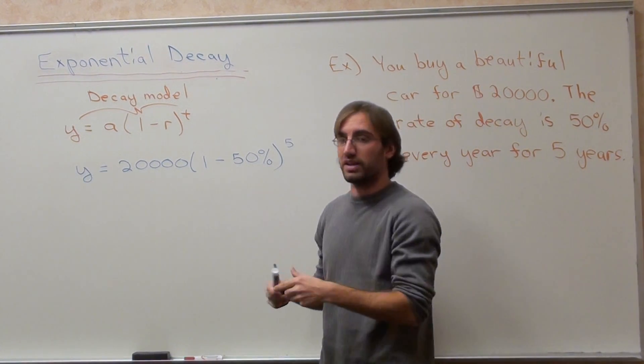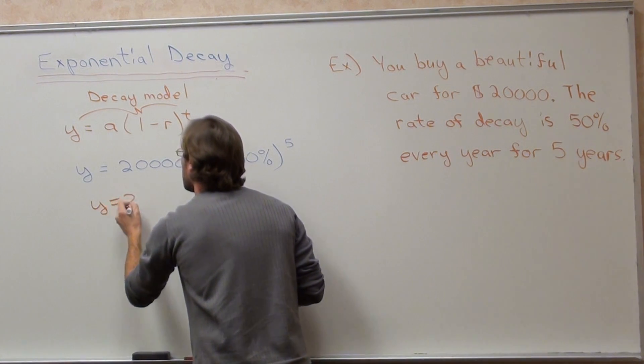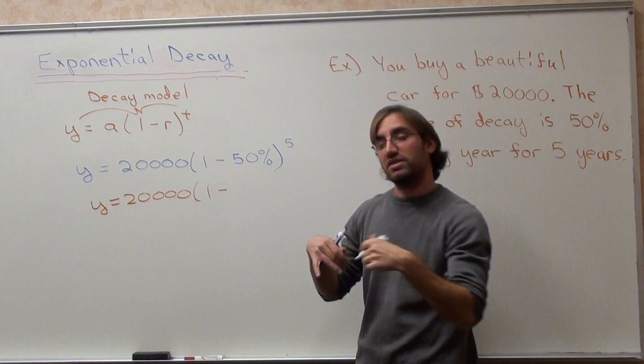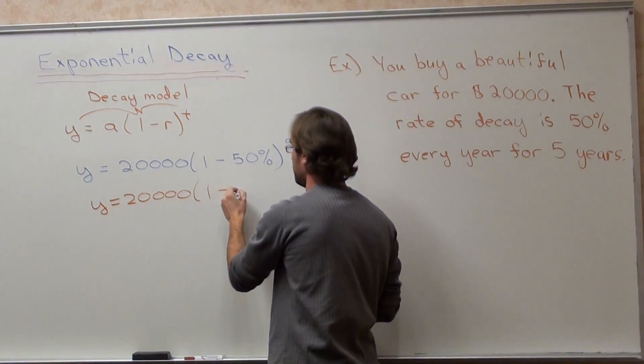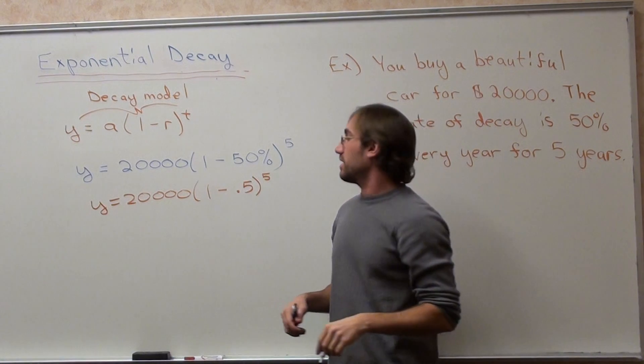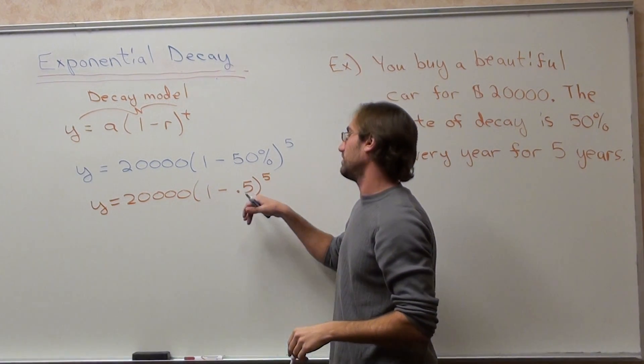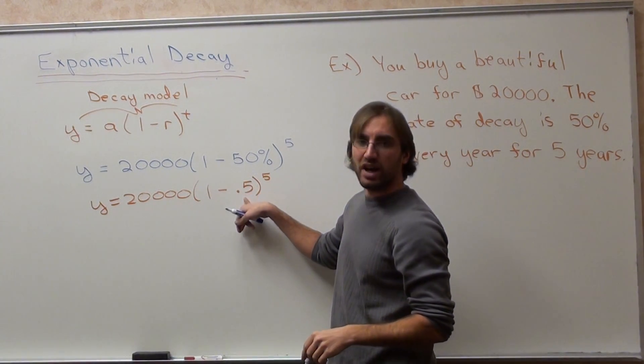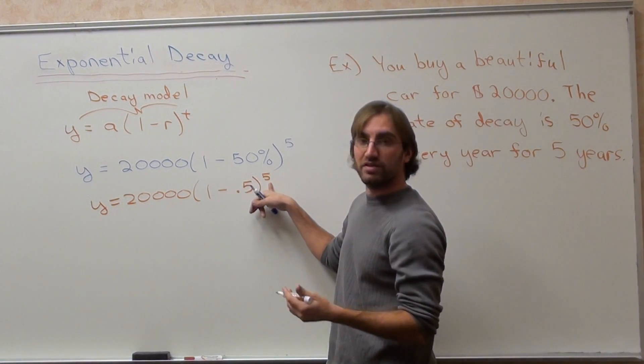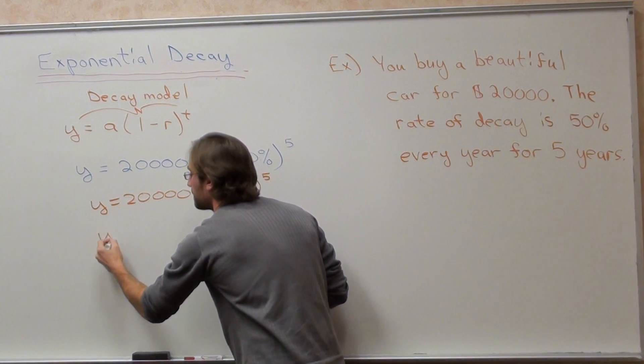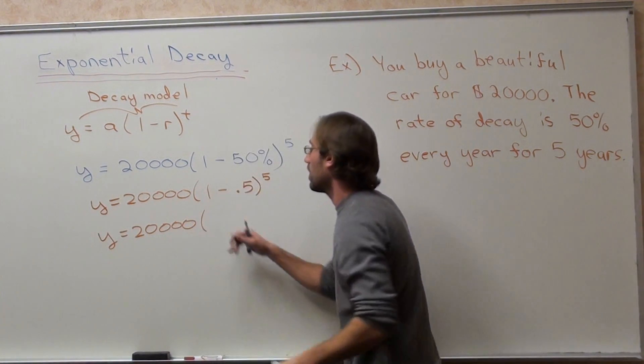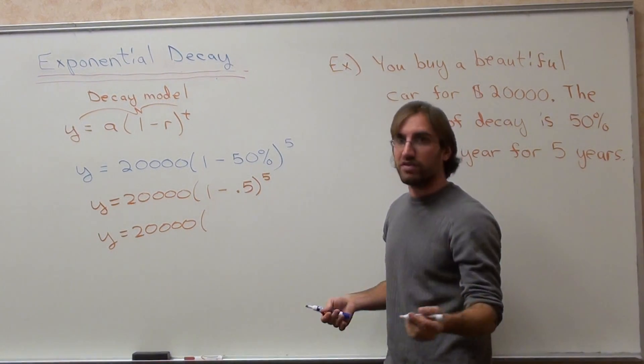So I'm going to go ahead and rewrite this. And 50% divided by 100 is 0.5, all to the power of five. Now, that's my growth rate, 0.5. Excuse me, my decay rate, 0.5. That's my time period, five years, my initial amount.